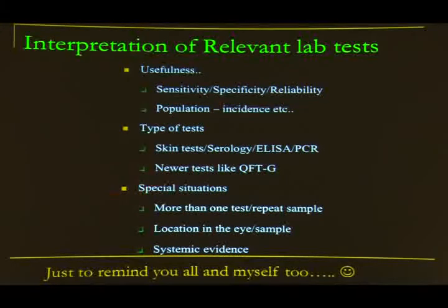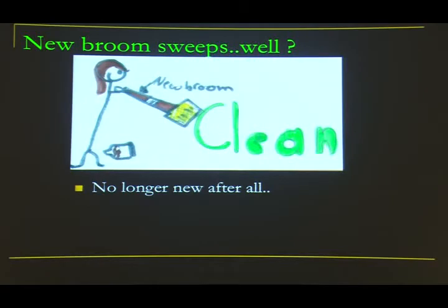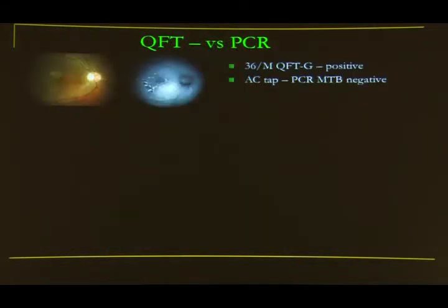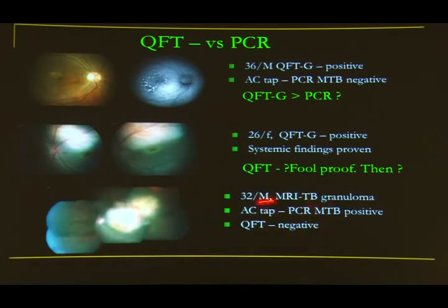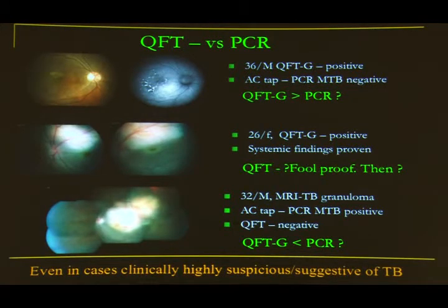Regarding newer tests: QuantiFERON is not new anymore. In serpiginous-like choroiditis where aqueous PCR was negative, QuantiFERON was positive suggesting TB. In a subretinal abscess, QuantiFERON was positive and clinical picture was typical TB. However, in another typical subretinal abscess case, QuantiFERON was negative but aqueous PCR for MTB was positive. In similar clinical scenarios, PCR and QuantiFERON can each be positive in different patients — even in highly suspicious TB cases, one test alone may not be conclusive.